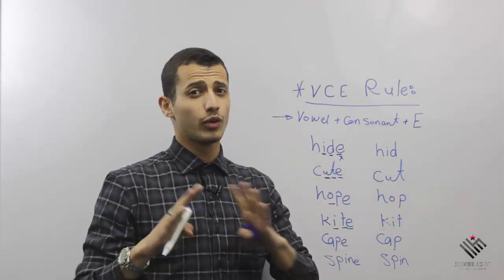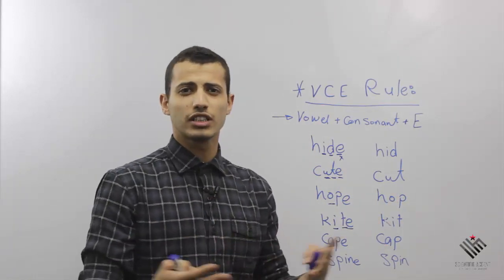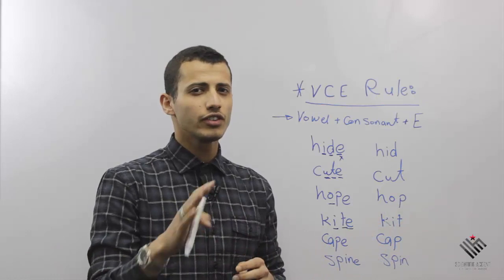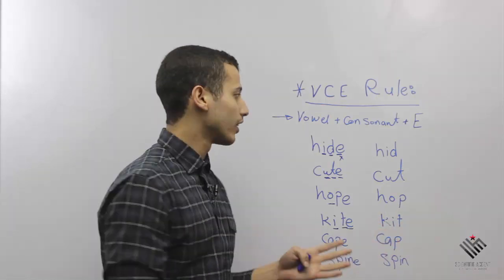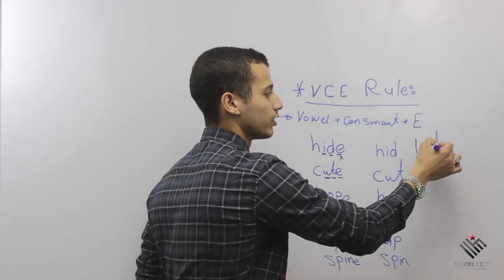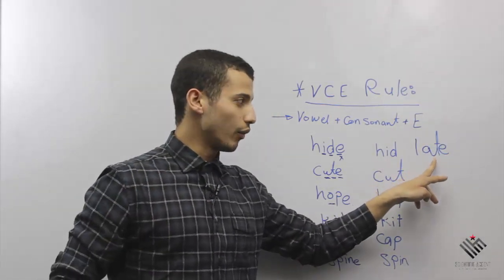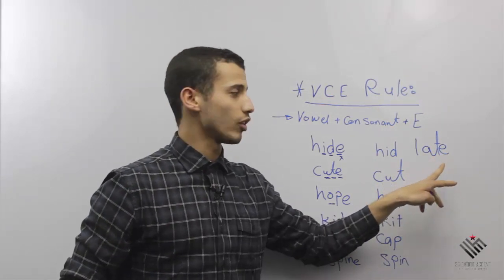It's very essential for your American accent and it will help you to read some of the words, even if this is the first time you've seen them. For example, this word here, which all of us know—this word is 'late.' Why? Vowel plus consonant plus E, so I'm going to pronounce this one as A, which is 'late.'